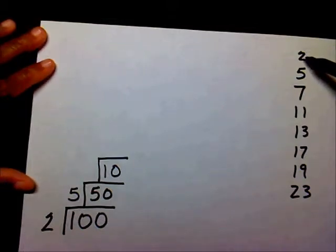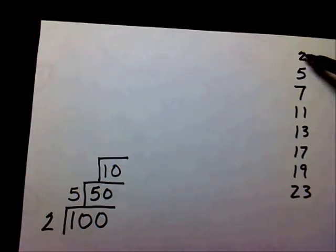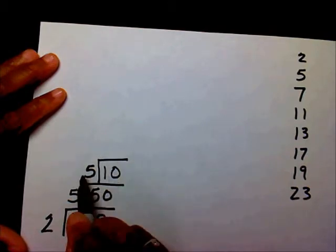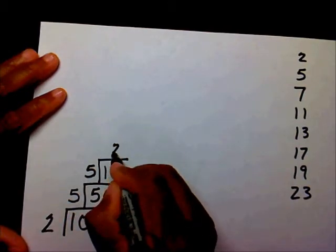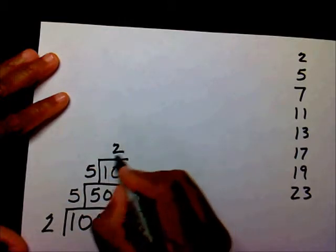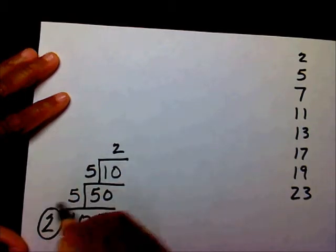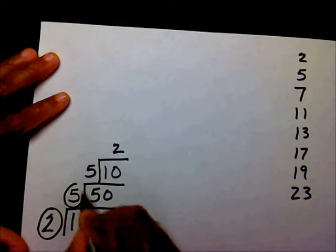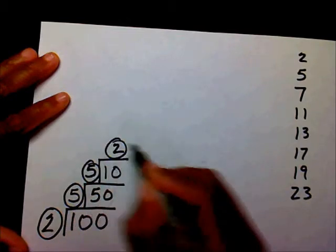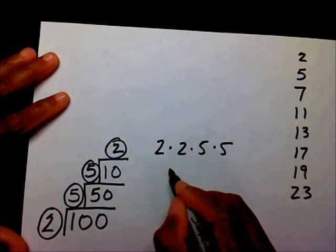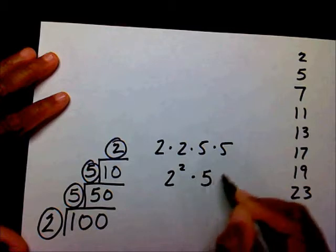Which one of these prime numbers will go into 10 evenly? You can either choose 2 or 5. Let's choose 5 again. 5 times what will give you 10? That's going to be 2. Now that we have a prime number at the top of our steps, we're finished. So our prime factorization is going to be 2 times 5 times 5 times 2, or 2 to the second times 5 to the second.